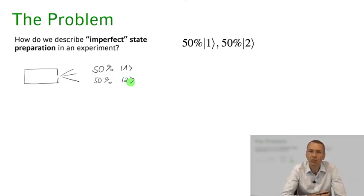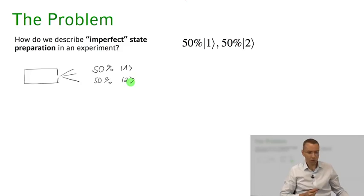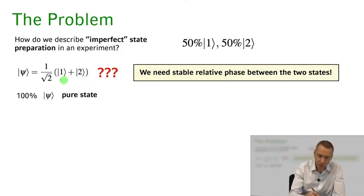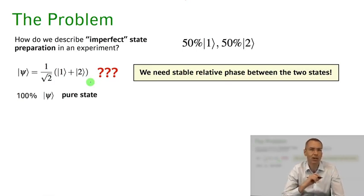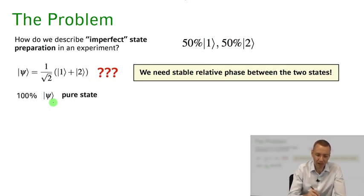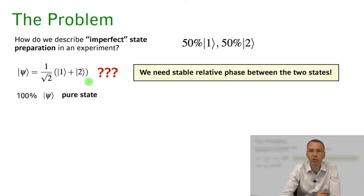The question is how can we describe such a situation with the language of quantum mechanics? The first thing you might say is: if it's 50-50 probability in state one or two, why don't we just write it as a superposition state one plus two? Well, actually then I wouldn't be doing such a lousy job, because now I have a source that with 100% probability emits particles in state psi, which is just this coherent superposition state. That's really not the situation I want to describe.